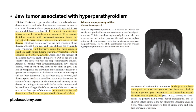The next question is about the jaw tumor associated with hyperparathyroidism. Primary hyperparathyroidism, also called osteitis fibrosa cystica, is caused by excessive parathyroid hormone, usually due to an adenoma of one or more parathyroid glands, hyperplasia, or rarely a functional carcinoma. It is three times more common in women than men, with a female predilection, usually affecting people of middle age.